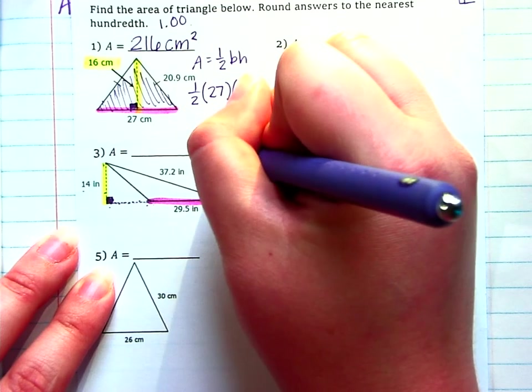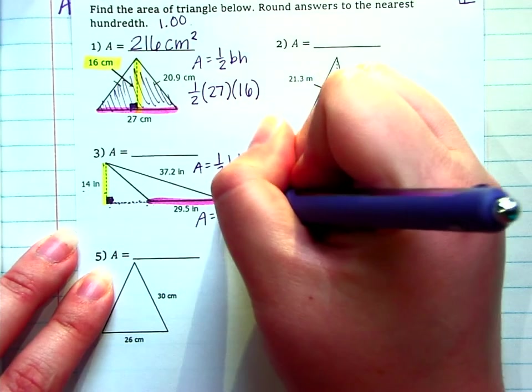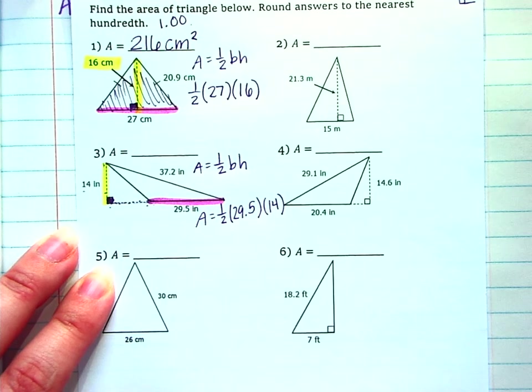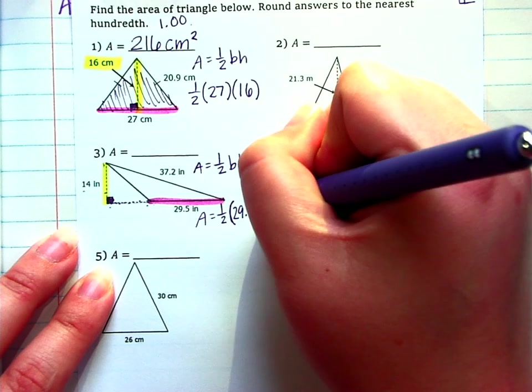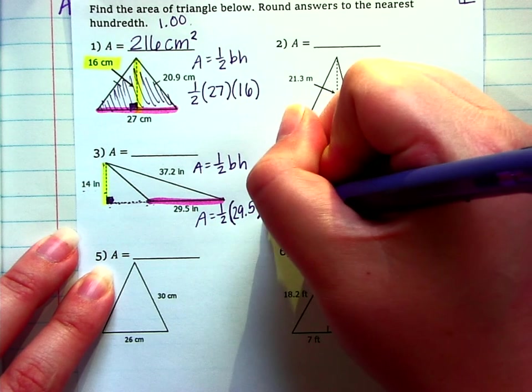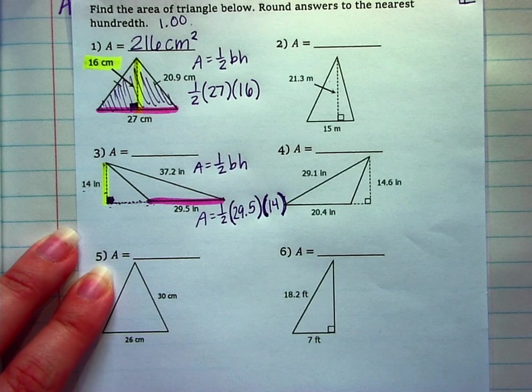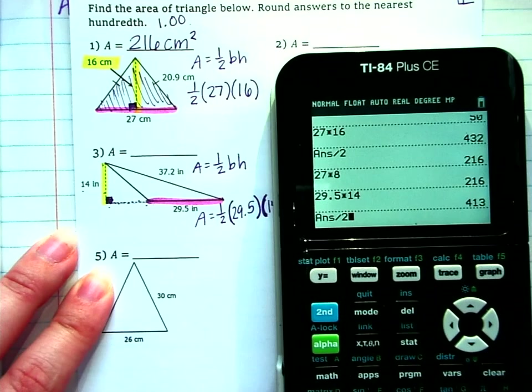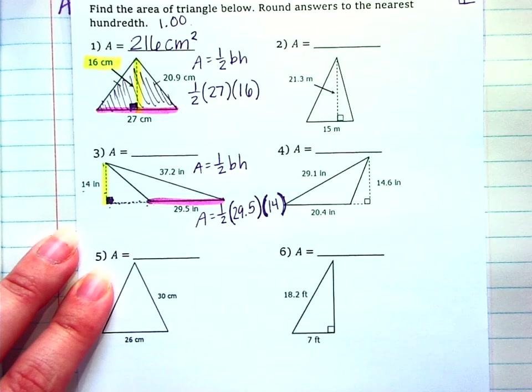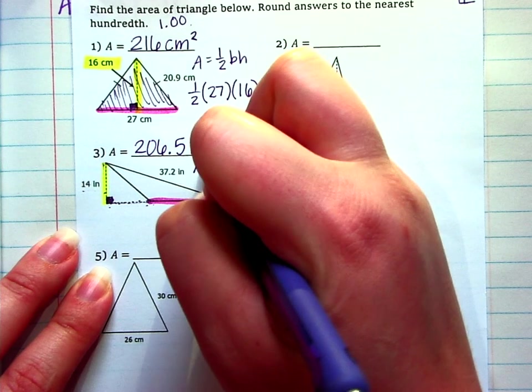So again it's a triangle. So you have to remember your formula. One half base times height. So we need to do half of 29.5 times 14. And I like to use parentheses to represent multiplication. I'm just kind of grouping off the numbers. You can use whatever symbols you prefer for multiplication. I don't know. For some reason I just like parentheses. So 29.5 times 14 and then divide that by 2. So we're going to get 206.5 inches squared.